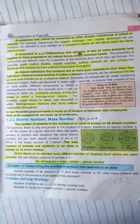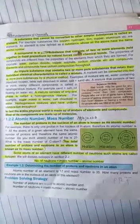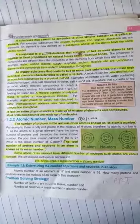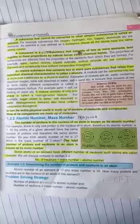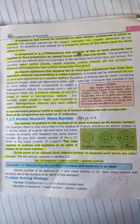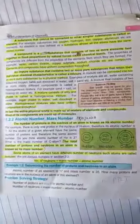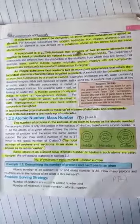For example, hydrogen has one proton, so its atomic number is one. Oxygen has eight, so its atomic number is eight. Similarly, carbon has 6 protons. In its nucleus it has atomic number 6.